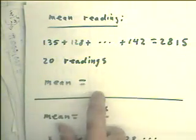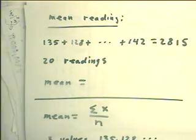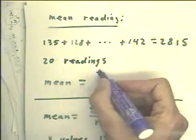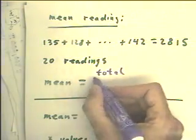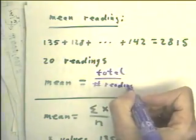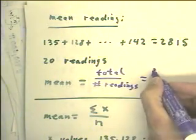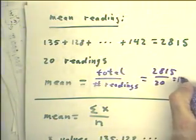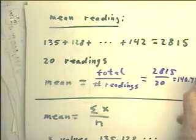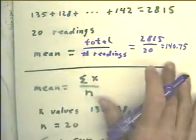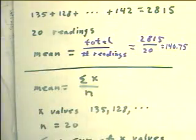Now, there were 20 readings, so what's the mean? Well, I guess that the mean would be the total over the number of readings, which is 2815 over 20, which would be 140.75. So there we have the mean. Fairly simple calculation.